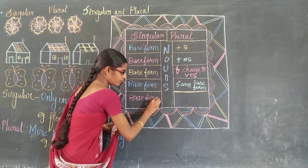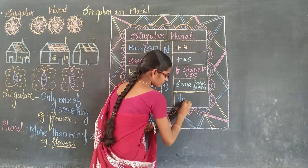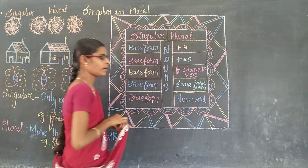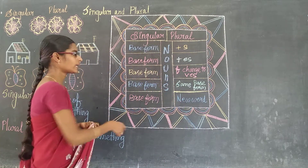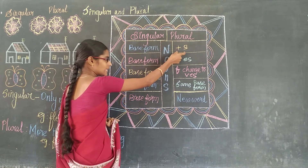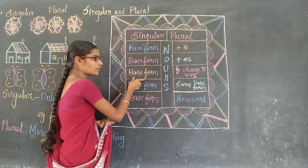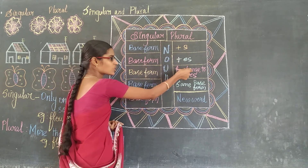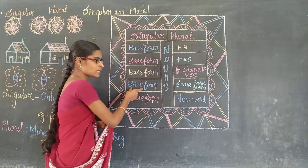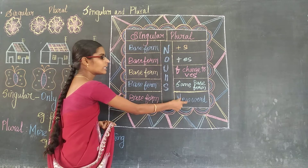So we have five rules in summary: first, base form plus 's'; second, base form plus 'es'; third, base form — F changes to VES; fourth, same base form for plural also; fifth, base form becomes a new word.